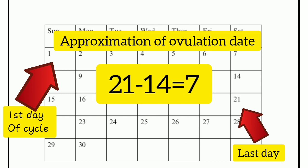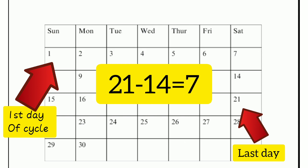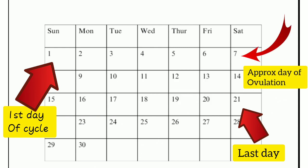That gives you 7. So on the 7th day of your cycle — around the 7th day — remember this is an approximate date of ovulation. Around the 7th day of the cycle is when ovulation is likely to happen.